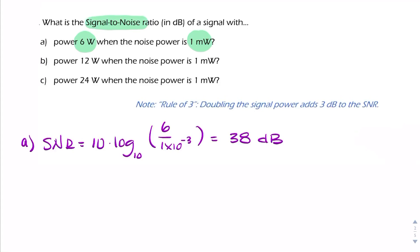For part B, exactly the same, except we have a power of 12 watts. The noise is unchanged. So for part B, it's 10 log base 10, 12 over 1 times 10 to the minus 3. And this time, we get 41 decibels.